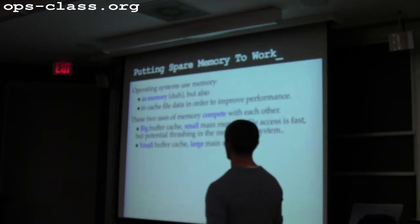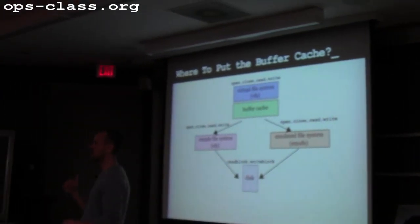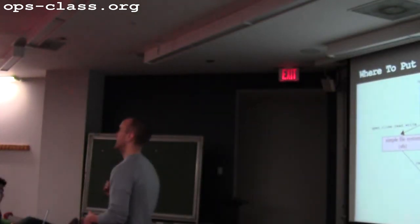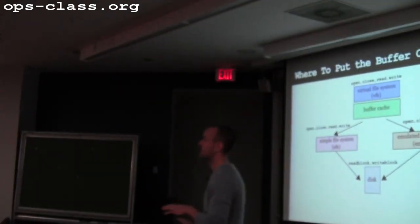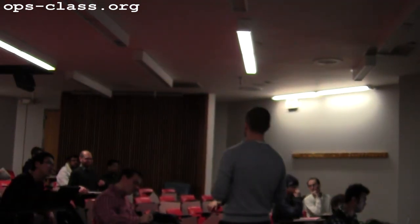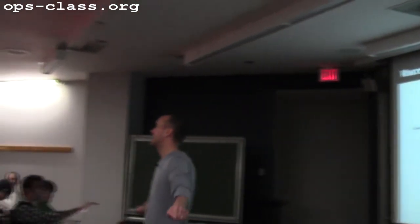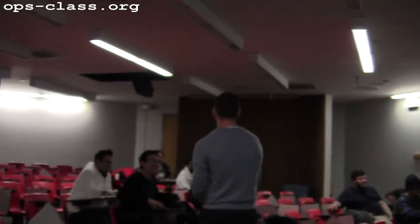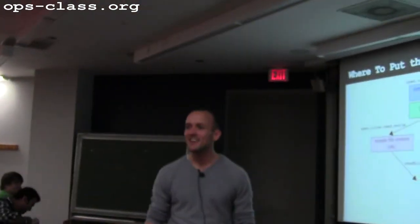I'm going to come back to this on Monday, because I'm out of time. On Monday we'll finish this — just another two or three minutes talking about the implications of putting the cache in different places. Then we'll talk about the Berkeley Fast File System, how it locates data structures, and essentially state-of-the-art 1970s design based on features of spinning disks. Have a great weekend, everyone.